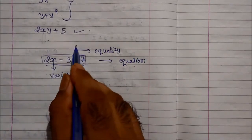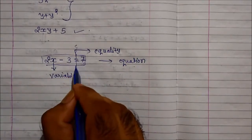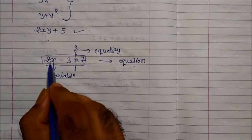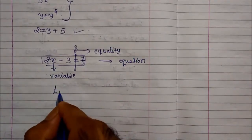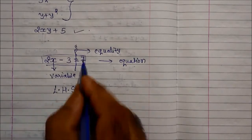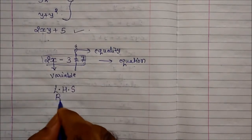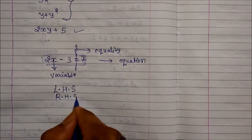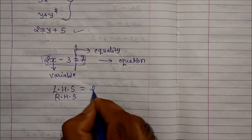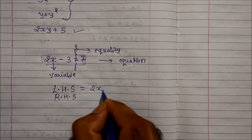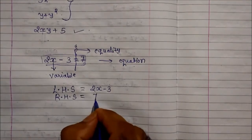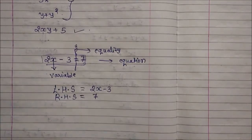When we cut this form from the 'is equal to' sign, we will get the left hand side and the right hand side. The left hand side is nothing but 2x-3, whereas the right hand side is nothing but 7.